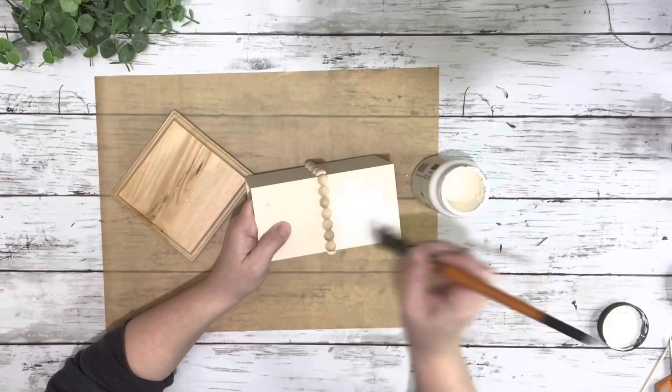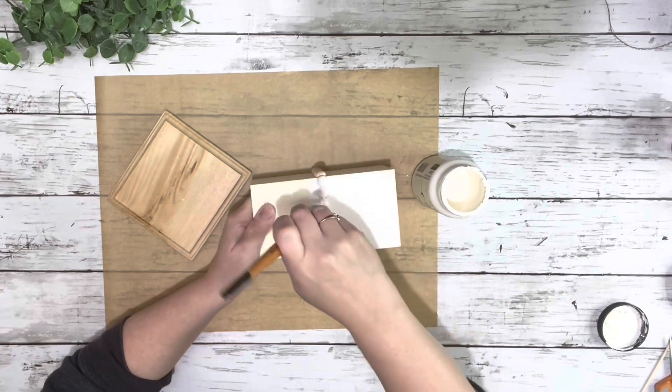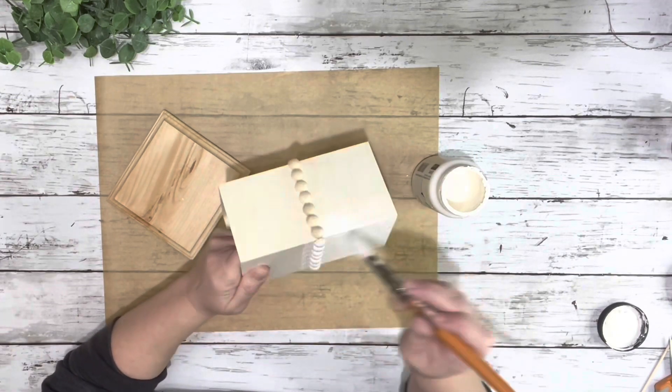Once that was done, I took the cottage white chalk paint and painted it with two coats. I painted everything except for the inside of the box and the bottom.